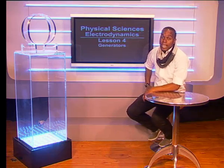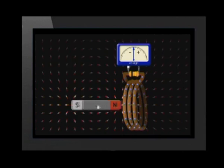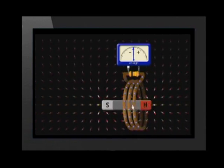Hello and welcome to the fourth lesson in our series on electrodynamics. In the previous lesson, we found that changing the magnetic flux around a conductor could create an EMF and current. In today's lesson, we will be looking at how machines called generators can use movement to create electricity.